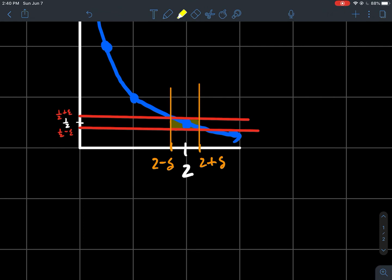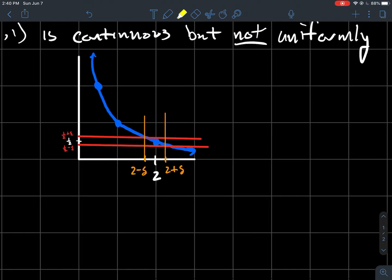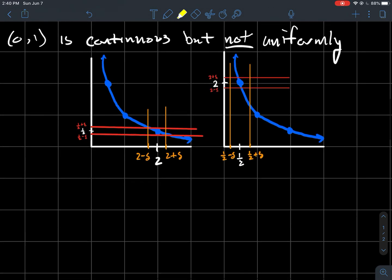So what uniform continuity says is I should be able to pick up that box and I should be able to move it around to any point. That same delta should work no matter where I put the box at on the graph. And so what I see, though, is what if I move closer to the left, where this function starts to behave a little bit more badly. It starts to get really, really tall really fast.